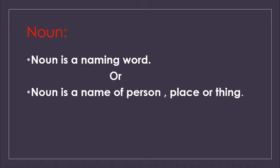Each and everything around you — in your bedroom, in your kitchen, in your house, in your garden, in your school, in your classroom — each and everything is a noun. So the definition of noun is: noun is a name of person, place or thing. And in short we say that noun is a naming word.